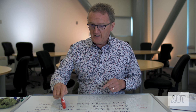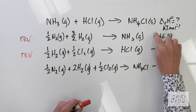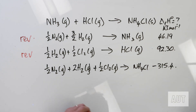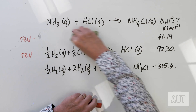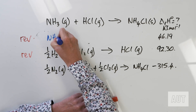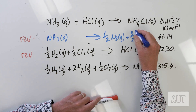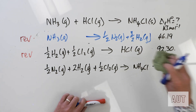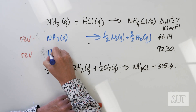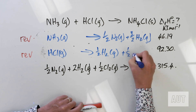Ammonium chloride is on the right-hand side in our target reaction and on the right-hand side here too — so we don't need to do anything to that one. If we reverse the ammonia and HCl equations, remember we also reverse the sign. So in the reversed equations we have: NH3 gas going to one half N2 gas plus three halves H2 gas, and HCl gas going to one half H2 gas plus one half Cl2 gas.